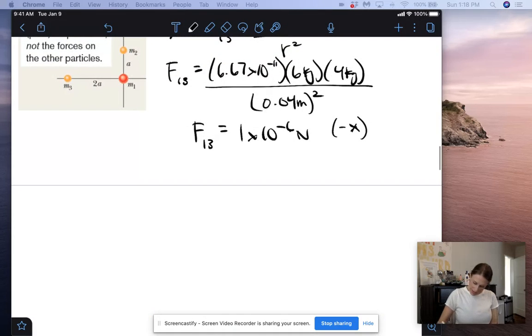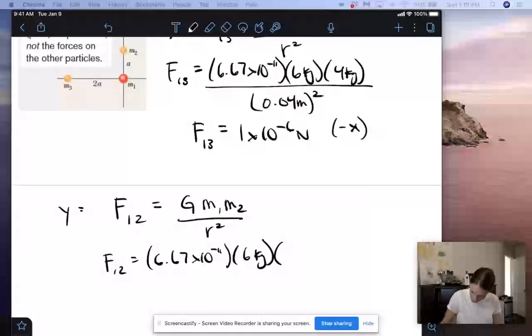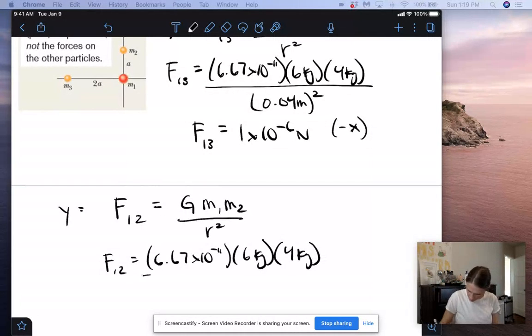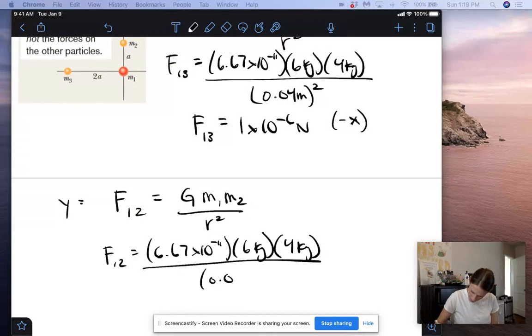Now, next we have in the y direction, we have the force on particle 1 from particle 2, and that's going to be G times mass 1 times mass 2 over the distance between them squared. So we get G, which is 6.67 times 10 to the negative 11th times mass 1, 6 kilograms, times mass 2, 4 kilograms, divided by the distance between them, which is just A, which we know is 2 centimeters, so 0.02 meters squared.